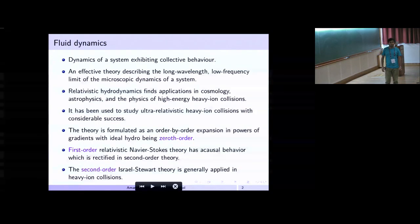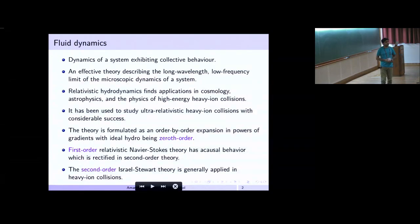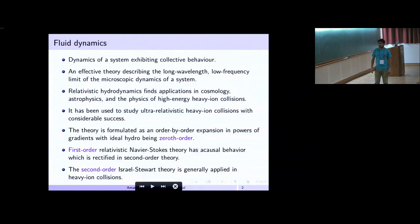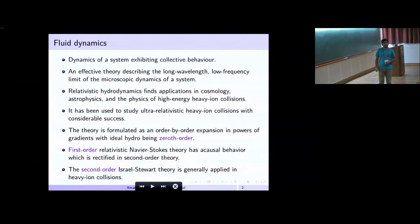In heavy-ion collisions, hydrodynamics has been quite successful in explaining a large number of phenomena. The relativistic hydro is formulated in an order-by-order expansion in gradients, where ideal hydro is zeroth order, relativistic Navier-Stokes is first order — which exhibits acausal behavior — and that's why we go to second-order theory, the Israel-Stewart theory, which is generally applied to heavy-ion collisions.